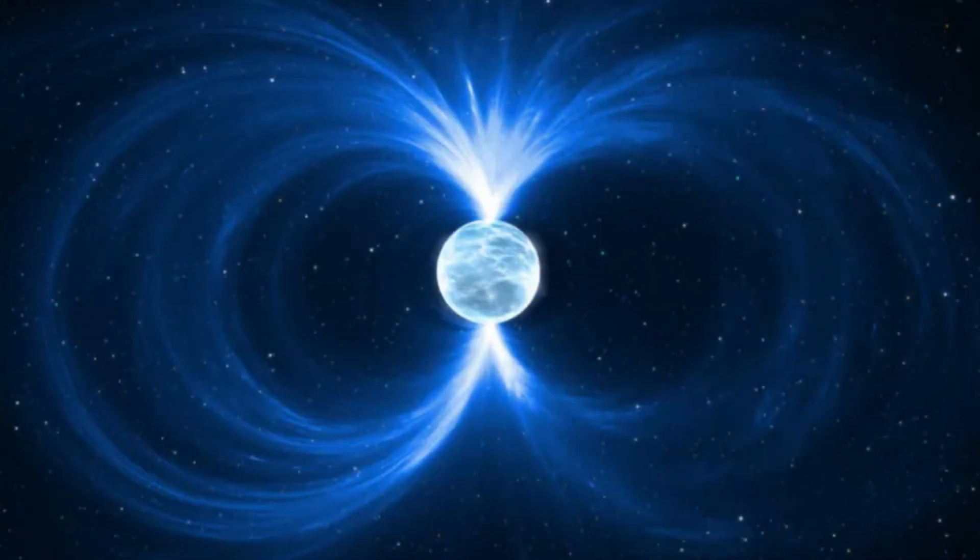PSR B1937 plus 21, 1.35 solar masses, 40 km in diameter.